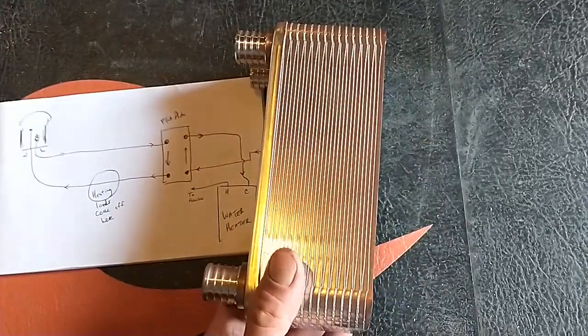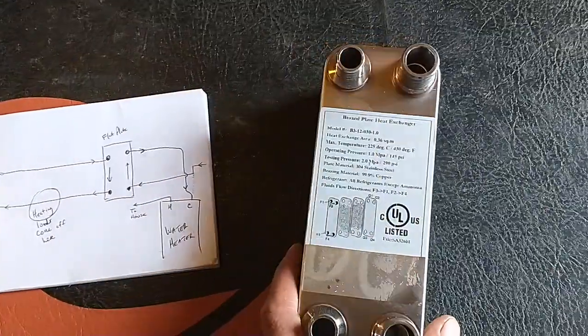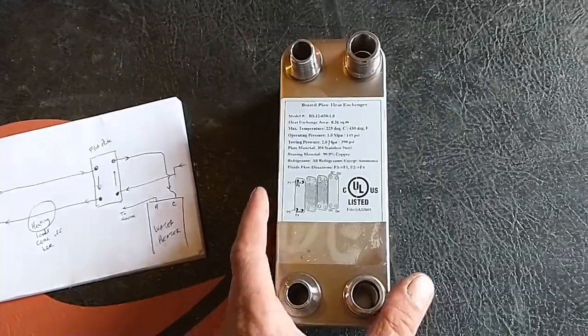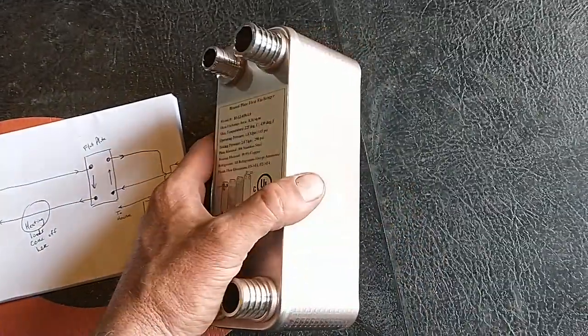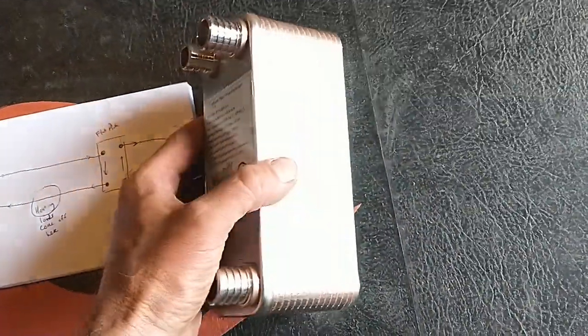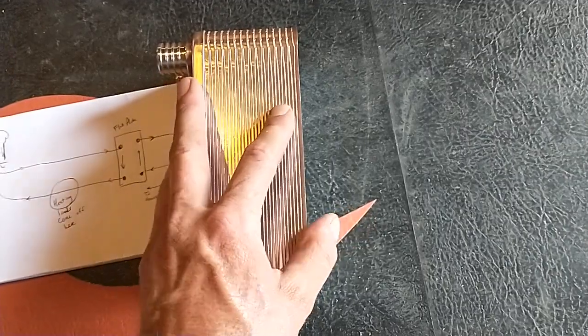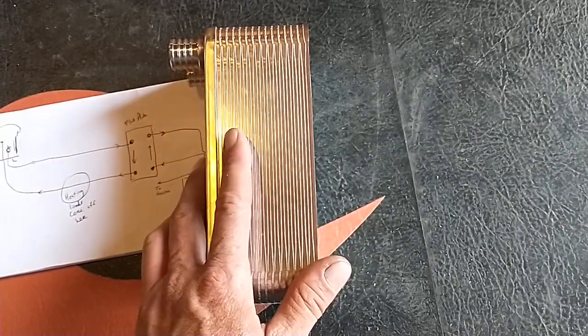I use a 30 plate so it doesn't restrict flow, but I don't go for the super five by twelves or something. This is a three by eight, it's plenty big enough to get all the hot water you need, but it has enough spaces or plates that it doesn't choke down the flow on the stove side of things.